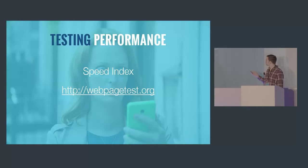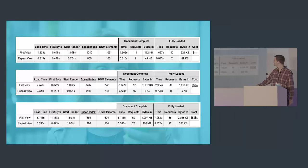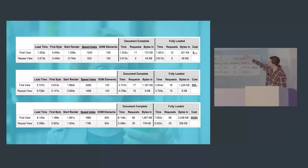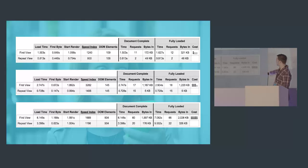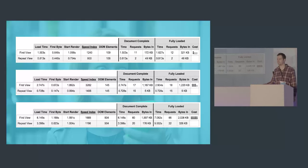There's a tool available called webpagetest.org which allows us to measure the speed index of our page — the average time in which visible parts of our page take to display. Google's recommendation is to aim for a speed index of 1000, which is about one second. The speed index improves on repeat views because we're caching our responses. There's also a useful cost link that shows how much your website will cost on different mobile devices in different countries.